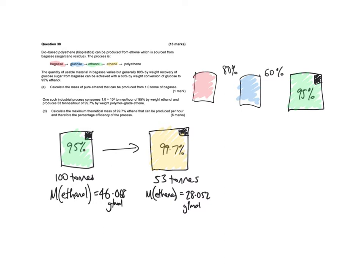That's going to be produced from one tonne of the bagasse. So here we have one tonne of this stuff, and it gets turned into glucose with an 80% weight recovery. Then 80% for the first conversion and then a 60% for the next conversion from glucose into ethanol.